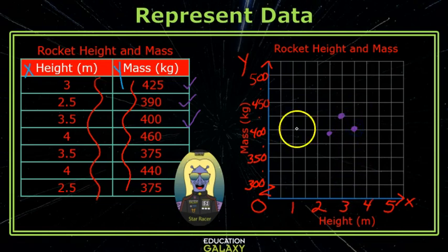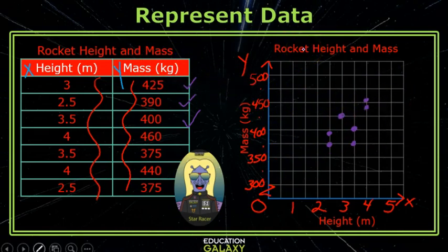Okay, let's finish graphing the rest of these points. Now, the reason a scatter plot is called a scatter plot is because the dots are kind of all scattered around. They're not in a straight line.